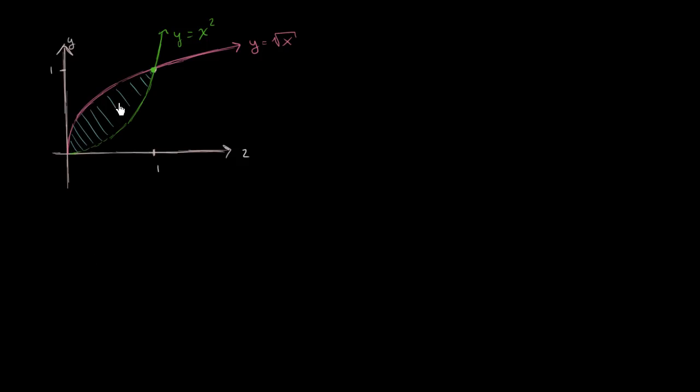And we know what the two endpoints are. The two endpoints are when these two functions equal each other. So x squared equals square root of x at 0, at x equals 0, and at x equals 1. So how do we think about this?